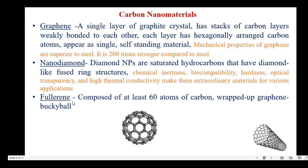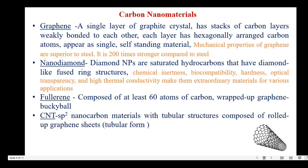Then we have fullerene — it is composed of at least 60 carbon atoms, and it is nothing but a wrapped-up graphene, a buggy ball shape. Then we have carbon nanotubes, which have sp2 hybridization. Carbon nanomaterials with tubular structures are composed of rolled graphene sheets, that is, in tubular form.